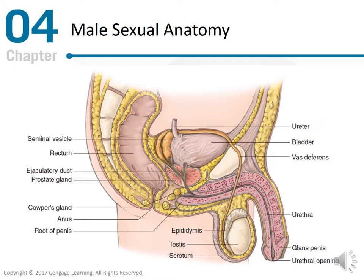In figure 4.6, the male sexual anatomy is shown. This is a cross-section side view of the male reproductive organs, including a cross-section of the vas deferens.